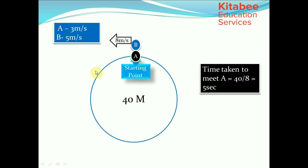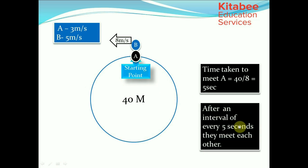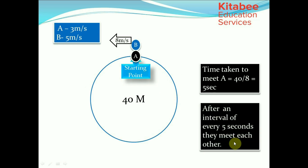If B continues to move, they meet each other at an interval of every 5 seconds. So when runners are moving in opposite directions, their speeds are added to get the relative speed, and the track length divided by their relative speed gives the time interval at which they meet.